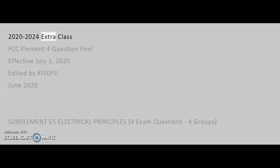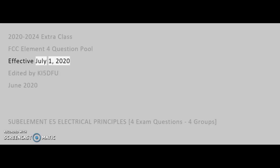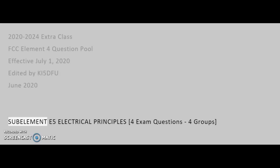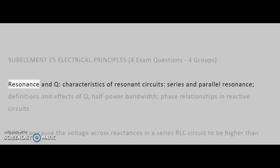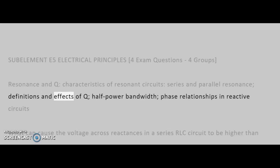2020-2024 Extra Class FCC Element 4 Question Pool, effective July 1, 2020. Edited by KI5DFU, June 2020. SubElement E5: Electrical Principles — 4 exam question groups covering Resonance and Characteristics of Resonance Circuits, Series and Parallel Resonance, Definitions and Effects of Q, Half Power Bandwidth, and Phase Relationships in Reactive Circuits.